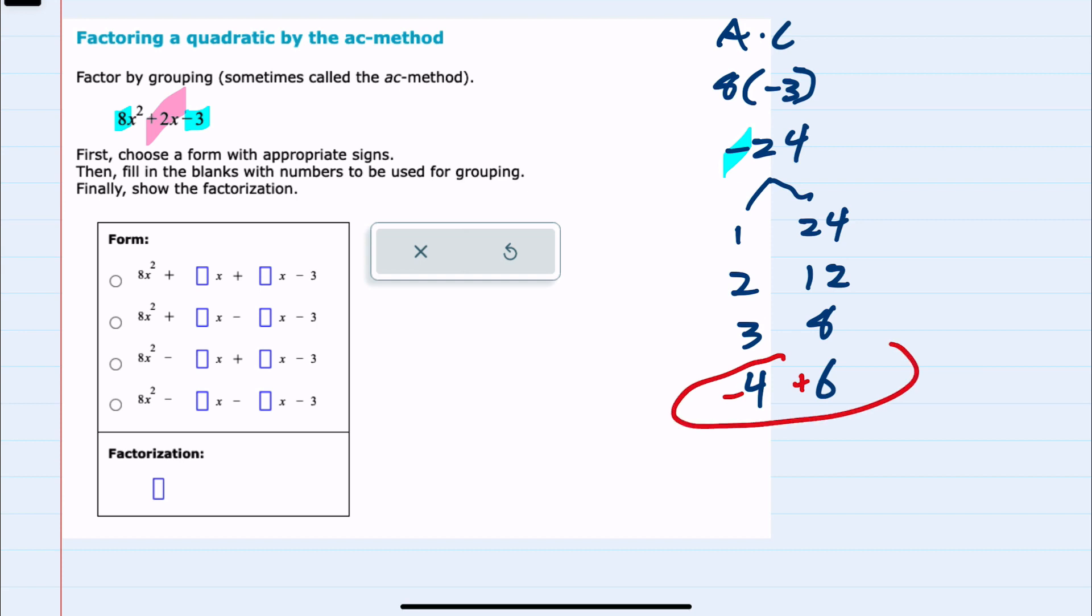and this allows me to rewrite our original quadratic. The first term will be the same, that's our 8x squared, but I want to replace that 2x with these values, so I can write that as negative 4x and then plus 6x, and then I still have that minus 3 term.